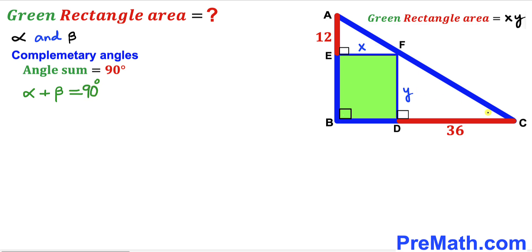Let's assume that this angle is alpha, then this angle has got to be alpha as well since these two angles are corresponding and therefore congruent. Likewise, if I call this angle beta, then this angle has got to be beta as well since they are our corresponding angles and they are congruent.